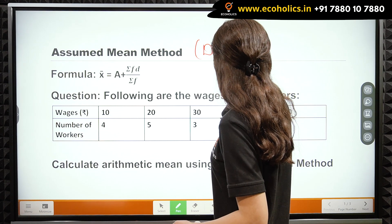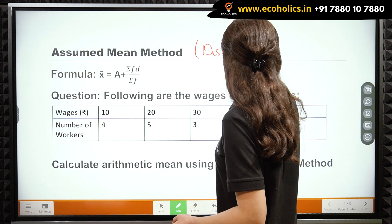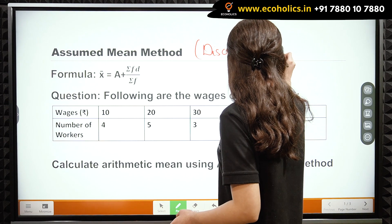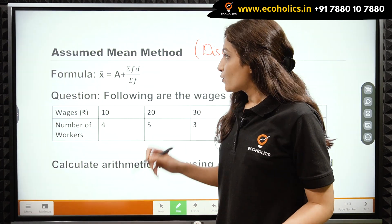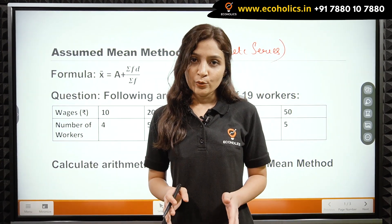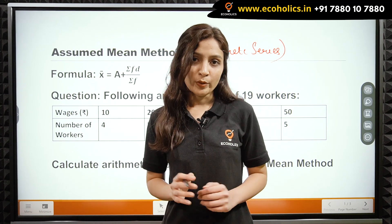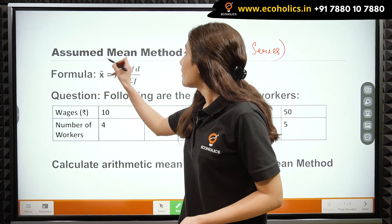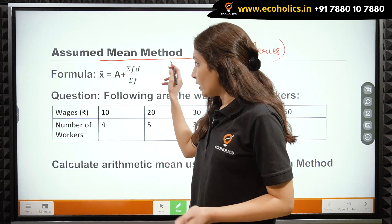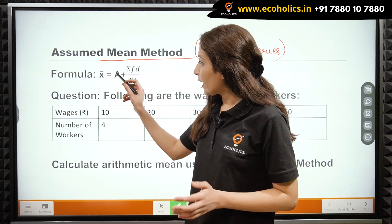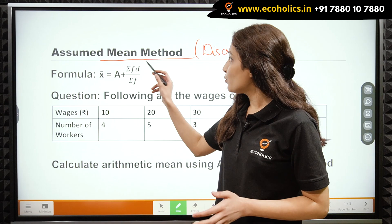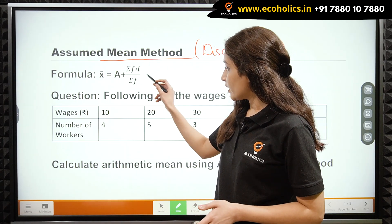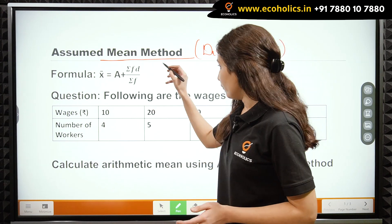We have a discrete series here. The assumed mean method is used when a series has large numerical values and to make our calculations simpler, we use the assumed mean method. The formula for calculating arithmetic mean using the assumed mean method is: A plus summation FD divided by summation F.